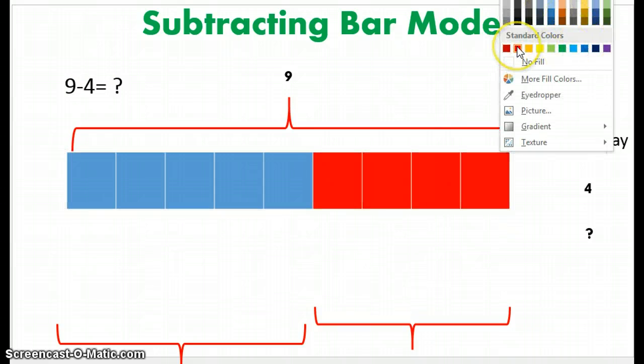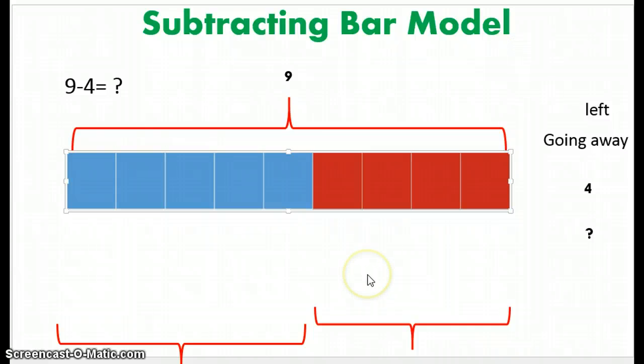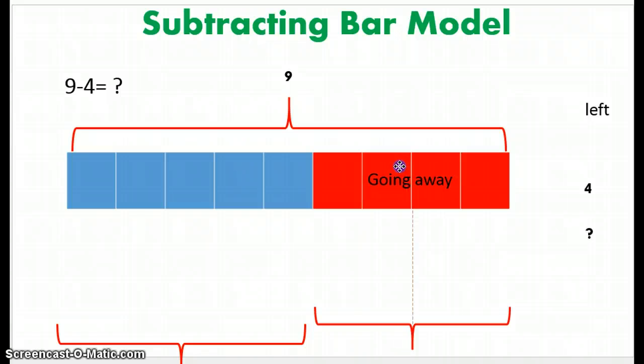This is a going away subtracting bar model. So these 4 here that are going away, we're going to label that going away. And this blue part here, we're going to label that what's left.